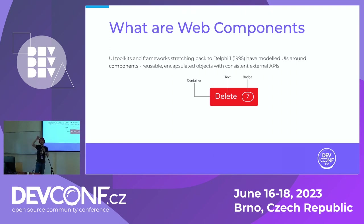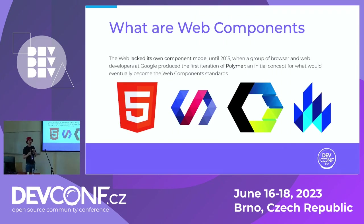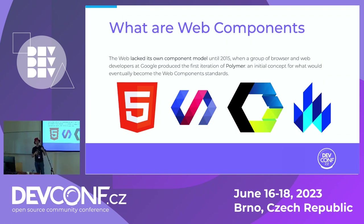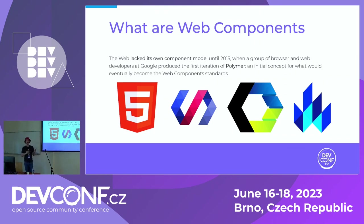You can have reusable objects with consistent UIs and APIs, whether in a drag-and-drop editor or an XML file. The web lacked its own component model until about 2015, when a group of web browser engineers and web developers got together at Google and planned out the future of web development. The browser engineers asked developers what they needed to make better applications, and they said they needed components. That project eventually became the Polymer project at Google, which later became the web component standards, standardized and shipped by every browser today.